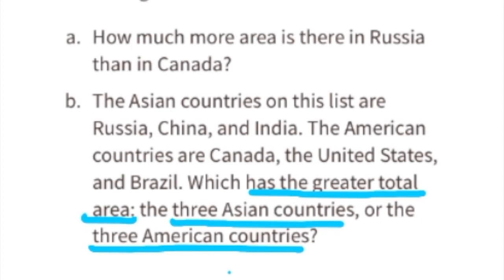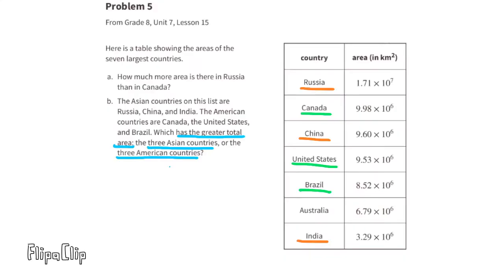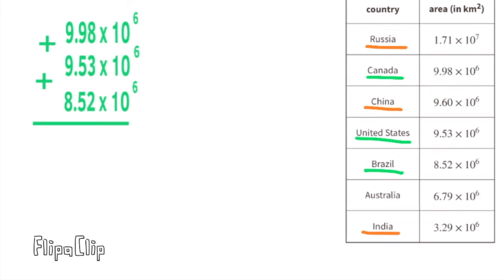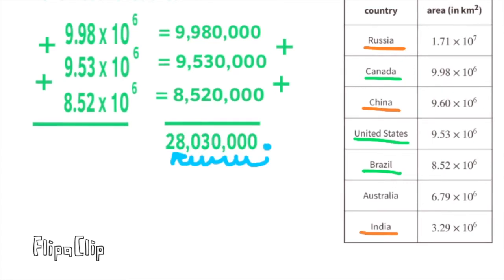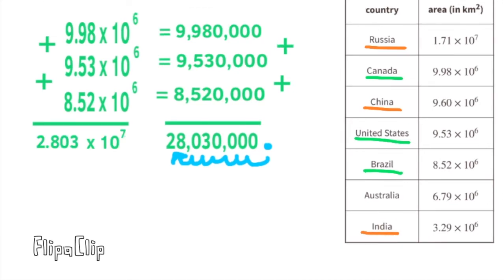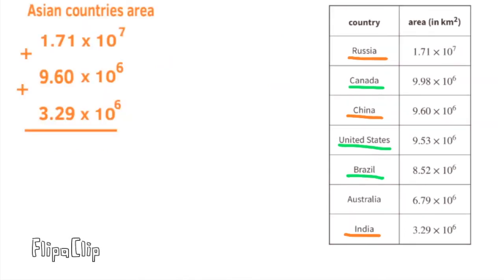Part B: The Asian countries are Russia, China, and India. The American countries are Canada, the United States, and Brazil. Which group has the greater total area? First, the three American countries: 9,980,000 + 9,530,000 + 8,520,000 equals a total of 28,030,000 km², written as 2.803 × 10⁷.